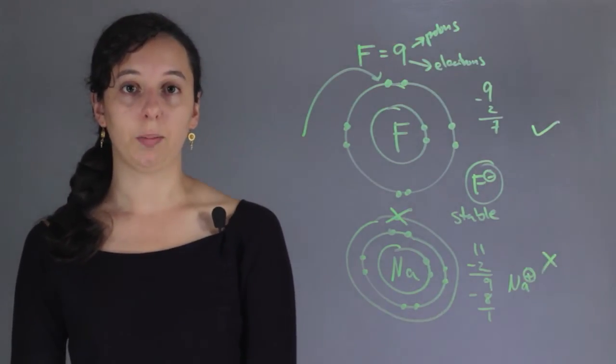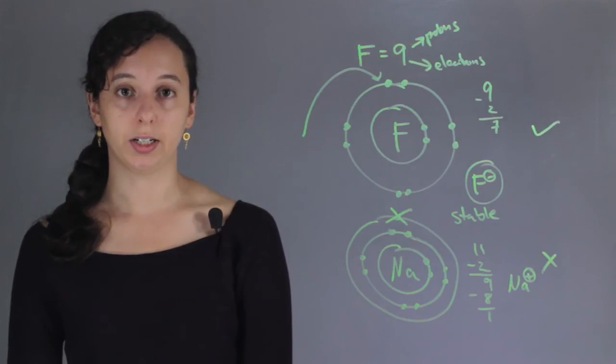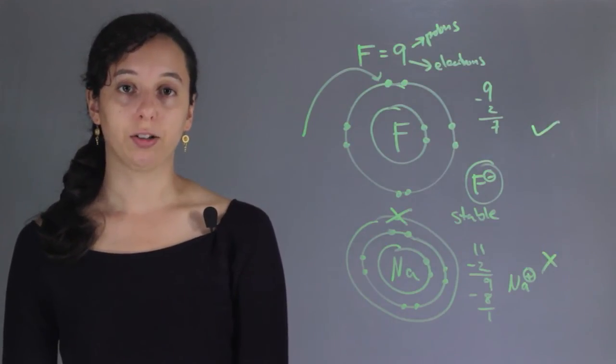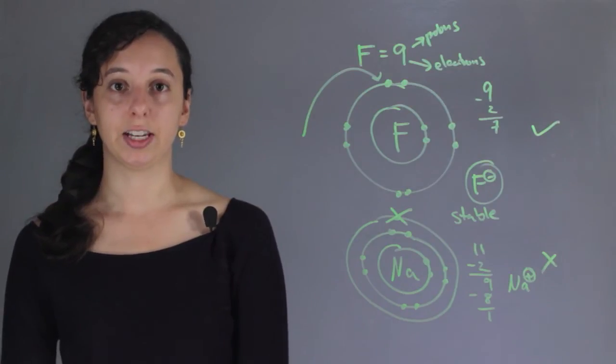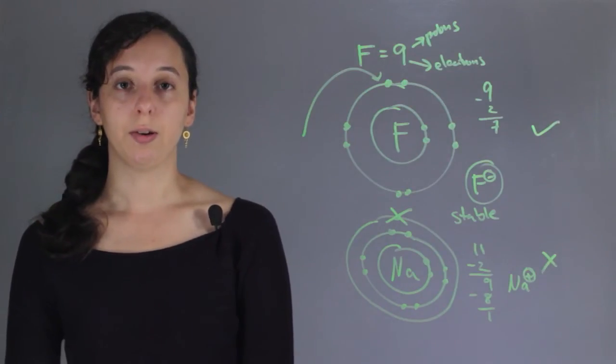You can find out whatever element you want to look up by going to the periodic table, looking up the number of valence electrons, and doing the same thing. I'm Robin Higgins, and this is Electron Stability with Adding an Electron.